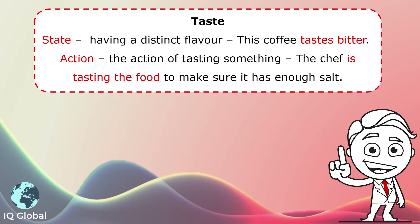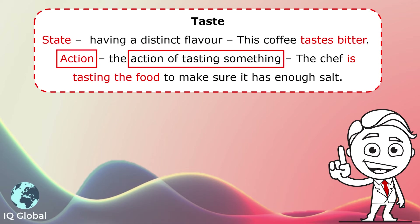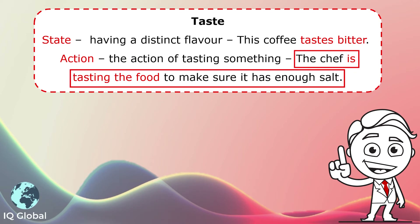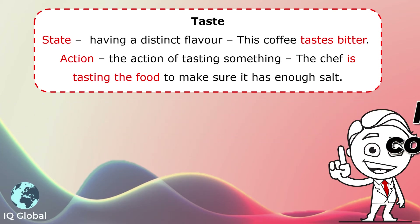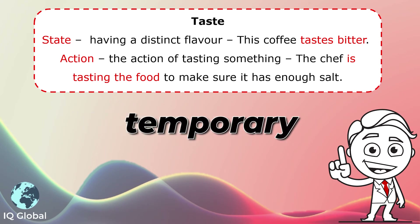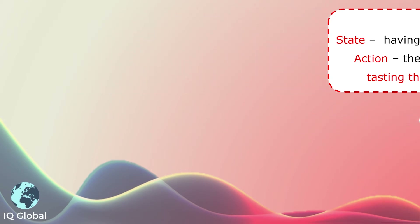Now let's make a sentence using an action stative verb — this is the action of tasting something. The chef is tasting the food to make sure it has enough salt. This is in the present continuous; he is doing this at the moment. It could change — the state of that food that he's tasting could change.